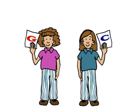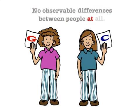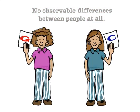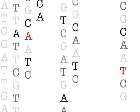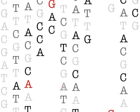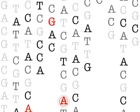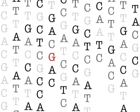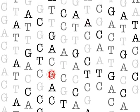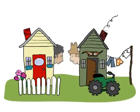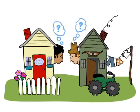Most SNPs, however, seem to lead to no observable differences between people at all. Since variants are passed down from one generation to the next, the number of differences between your DNA and your neighbor's can tell you how closely you are related to each other.